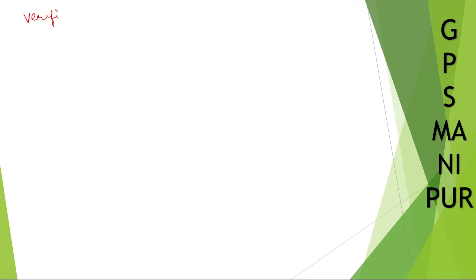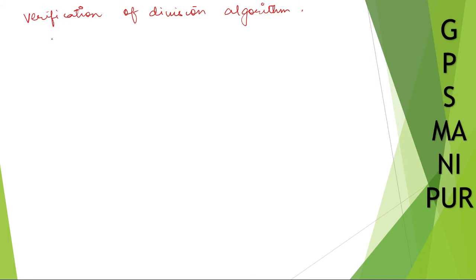Verification of the division algorithm. We need to verify the division algorithm. What we have is: P of x is equal to Q of x into D of x plus R.